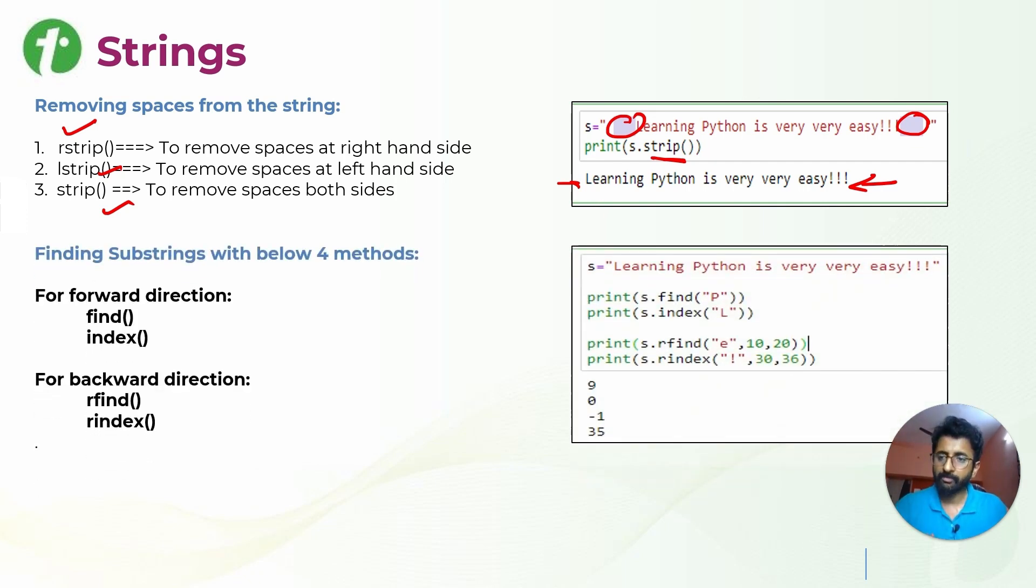We have finding the substrings with four methods. For example, in this particular string, you wanted to find if P is there, if V is there. You can use find method. In forward direction, you can do s dot find of V. It will check in s and tell where V is present and output the index of it. It is at 9th position.